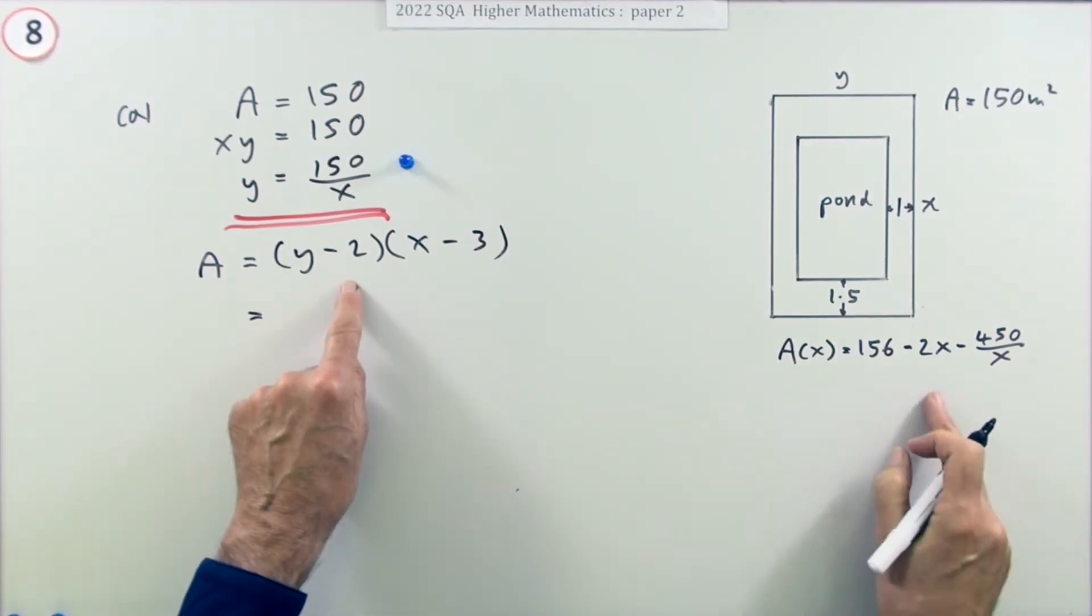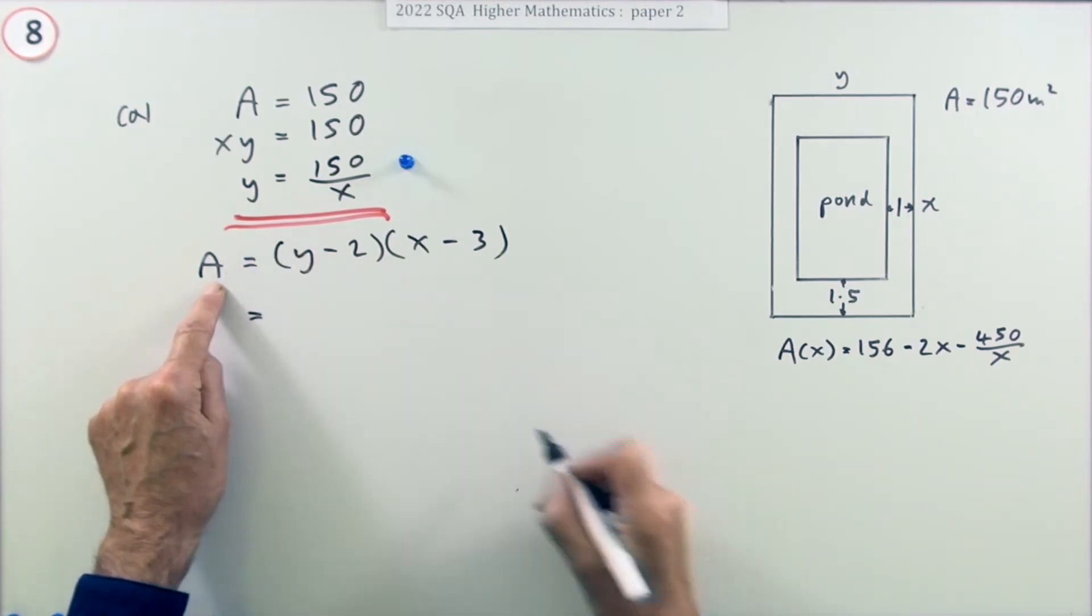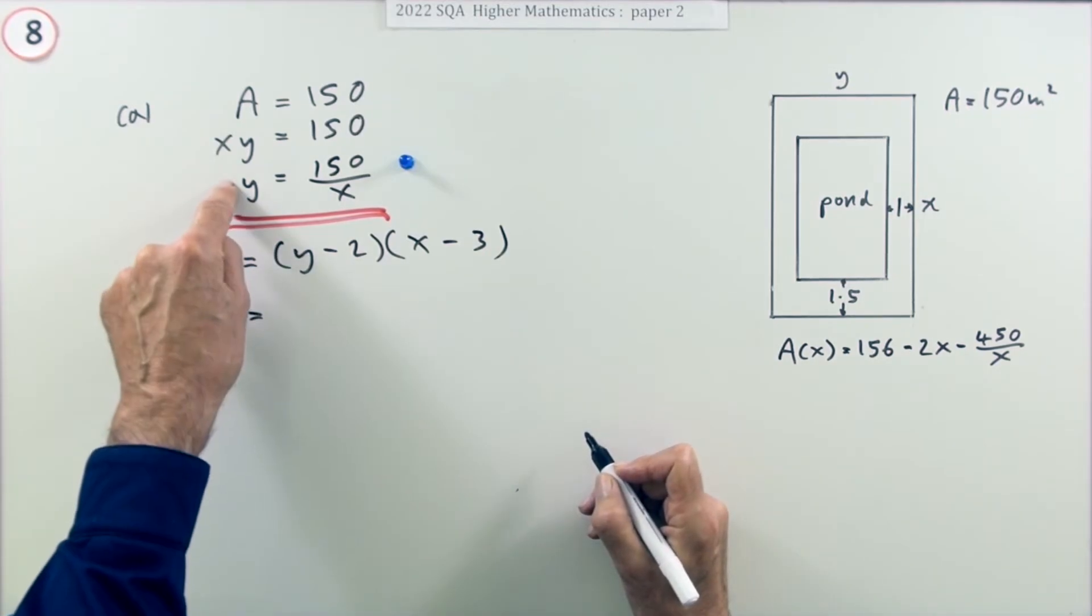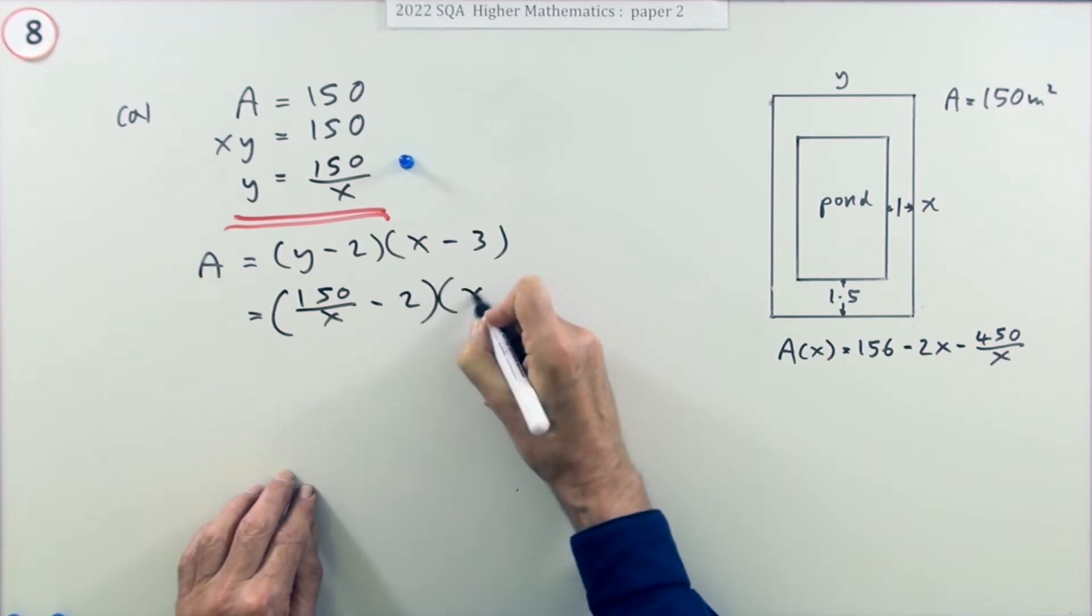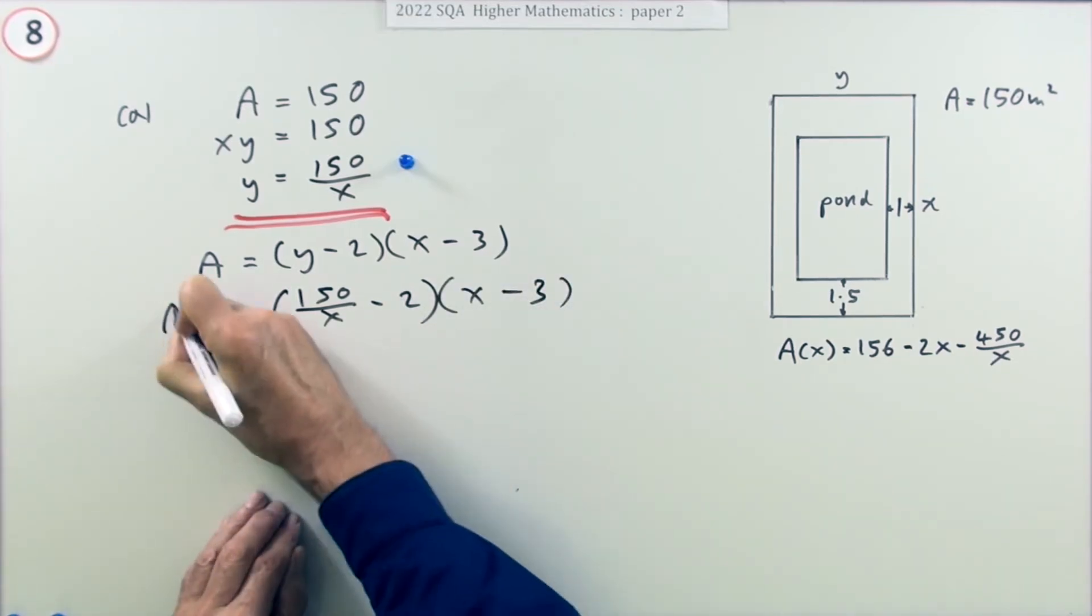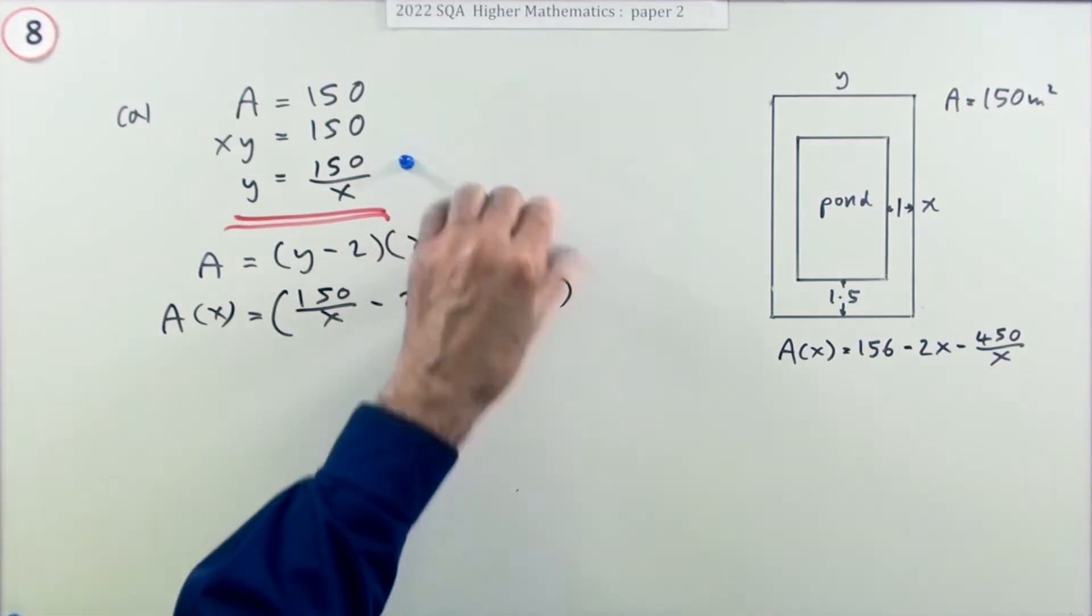That's the formula you want. There's a y in it, that's why I'm just writing A here. A is really a function of x and y. I've got something for y, so now I can replace that. So that's 150 over x minus 2 times x minus 3. Now I've got that as a function of x alone. Doing that gets a mark.